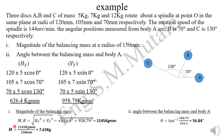The magnitude of the balancing mass is found by: m·r = √(626.4² + 958.79²). This gives the product of the balancing mass and its radius. Since the radius of the balancing mass is given as 150 mm, dividing by 150 mm gives the mass of the balancing mass.